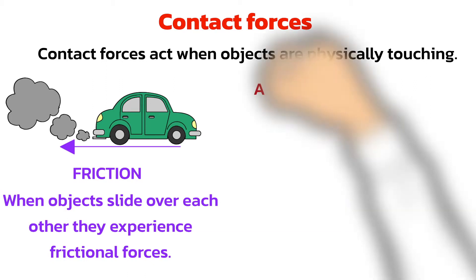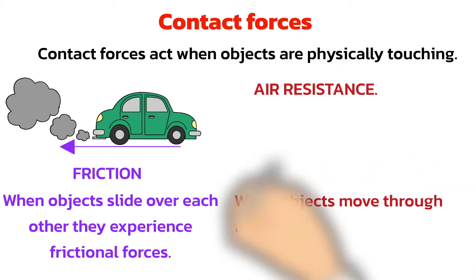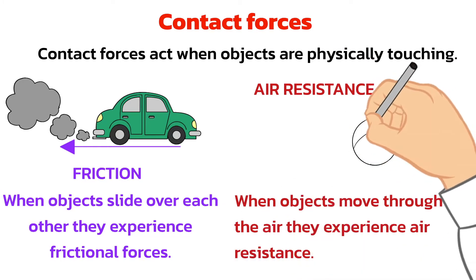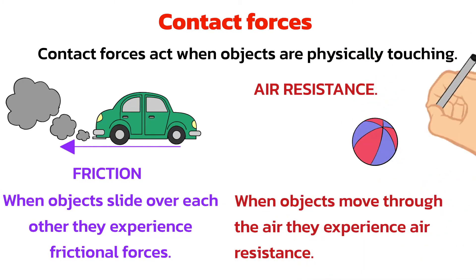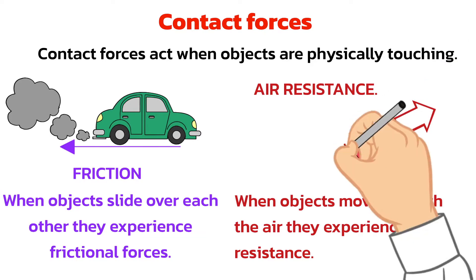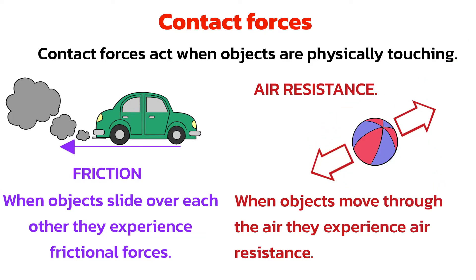When objects, like this beach ball, move through the air, they experience air resistance. This is because the air particles move over the surface of the ball as it moves. Air resistance, like friction, acts in the opposite direction to the motion of the object.